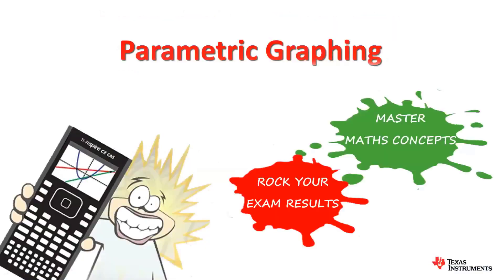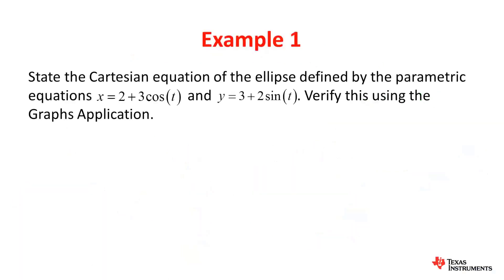In this video, we will be looking at parametric graphing and how we can efficiently use our CX CAS to work on parametric graphing questions. To start with, we have example 1. State the Cartesian equation of the ellipse defined by the parametric equations x equals 2 plus 3 cos t and y equals 3 plus 2 sin t. Verify this using the graph's application.